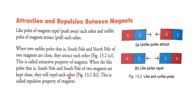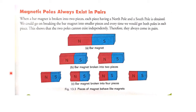When like poles — South Pole and South Pole, or North Pole and North Pole — are kept close, they will repel each other, pushing away. This is called the repulsive property of magnets. You can see in the picture: unlike poles attract, and South Pole and South Pole repel, pushing away from each other.